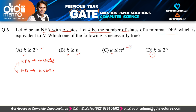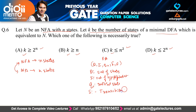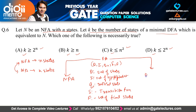First, you should know the definition of finite automata. Finite automata can be defined by the quintuple (Q, Σ, Q0, δ, F), where Q is the set of states, Σ is the set of input alphabets, Q0 is the initial state which is always single, δ is the transition function, and F is the set of final states.